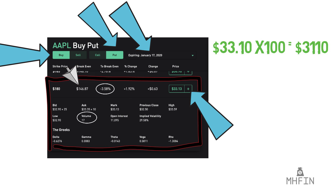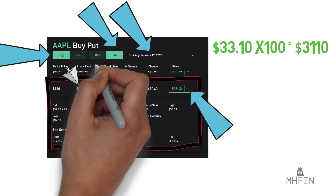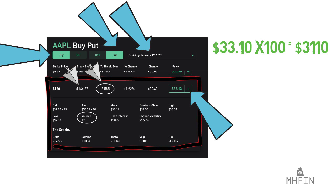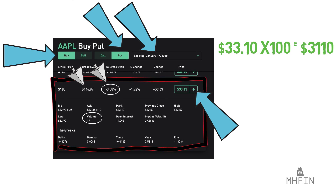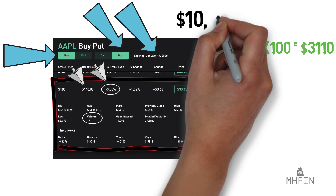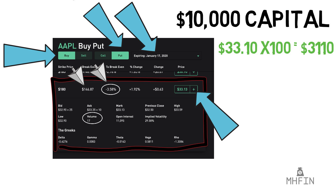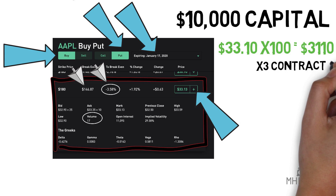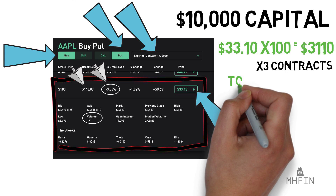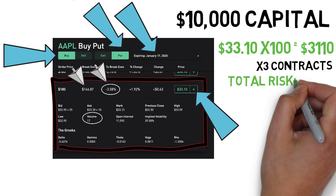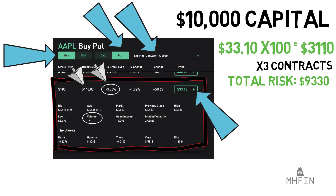If we look into the details, we see that the breakeven price is $146.87, which in simple terms means Apple stock needs to fall 3.58% off its current price prior to January 17, 2020 in order for Mike to begin making money. Now if we pretend Mike has $10,000 worth of capital he is ready to bet on Apple going down, we can derive that he can buy 3 of these option contracts for a total price and risk of $9,345. This is the most amount of money he can lose in this bet.